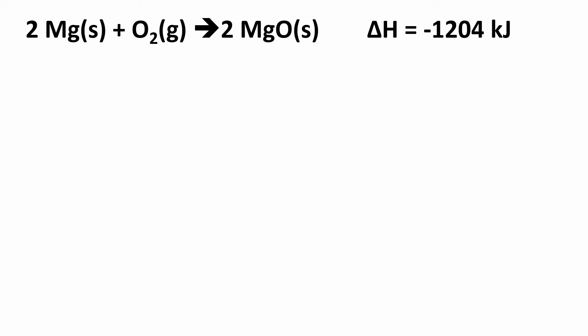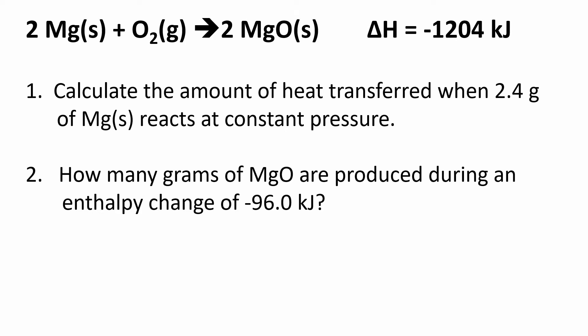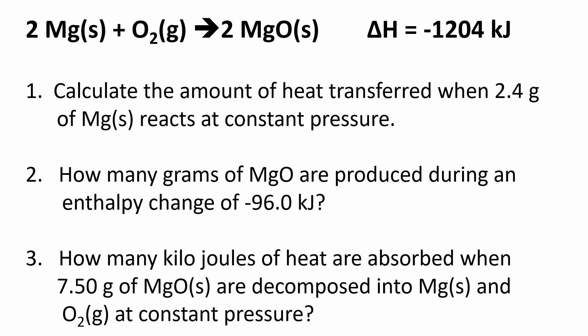Consider the following balanced chemical equation where 2 moles of solid magnesium reacts with 1 mole of oxygen gas to form 2 moles of solid MgO, magnesium oxide, with a delta H value equal to negative 1204 kJ. We're asked to calculate the amount of heat transferred when 2.40 grams of magnesium reacts at constant pressure. Then we'll be asked how many grams of MgO are produced during an enthalpy change of negative 96.0 kJ. And finally, how many kJ of heat are absorbed when 7.50 grams of solid MgO are decomposed into magnesium and oxygen gas at constant pressure.